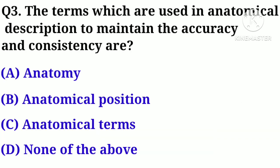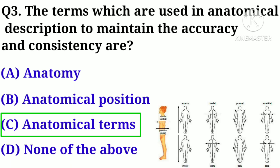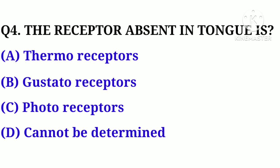Question number 3. The terms which are used in anatomical description to maintain accuracy and consistency are: Option A. Anatomy, B. Anatomical Position, C. Anatomical Terms, D. None of the above. Correct answer: Option C. Anatomical Terms.